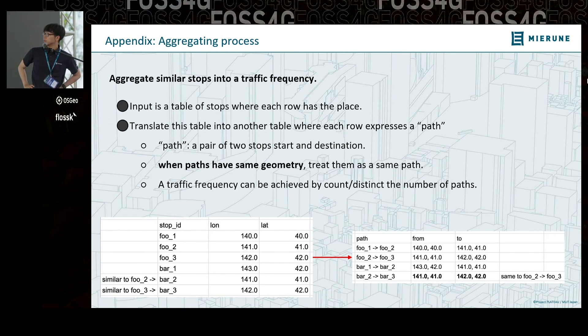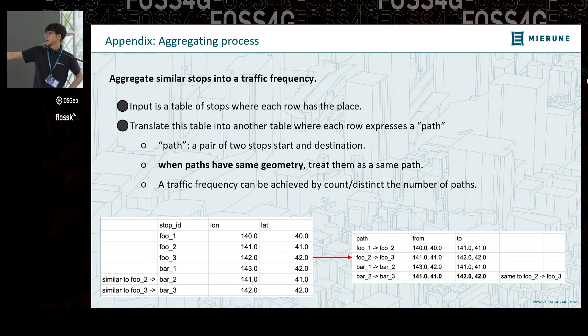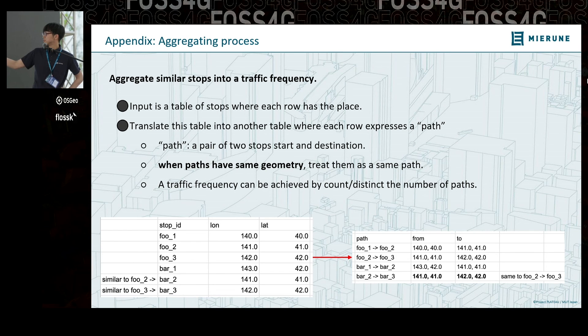More technical detail: in GTFS Go, I aggregate similar stops into traffic frequency. There is no path table in GTFS, so we create one. The input is a table of stops, and I convert it to a path table where each row has from, to, and geometry. I can aggregate frequency by counting the distinct number of paths per geometry.